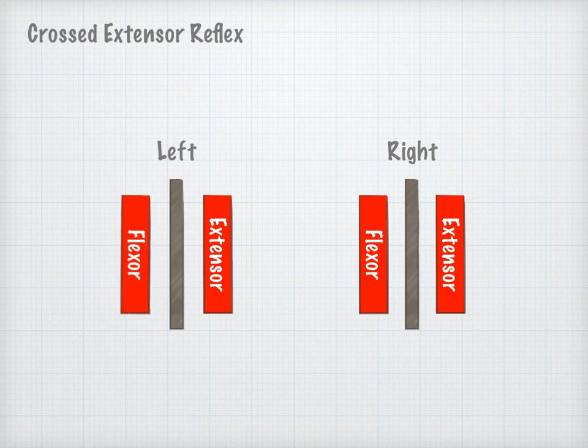When the flexor muscle group in one extremity is contracted voluntarily, the flexor muscle group in the contralateral extremity relaxes and the contralateral extensor group contracts.